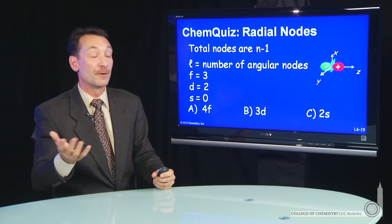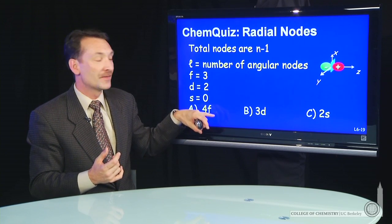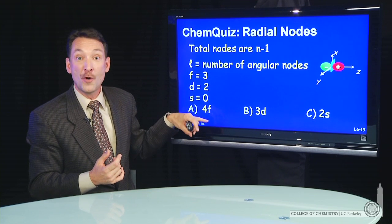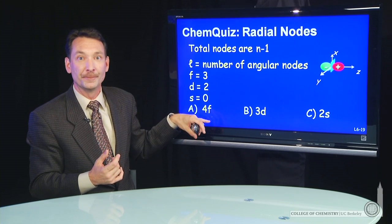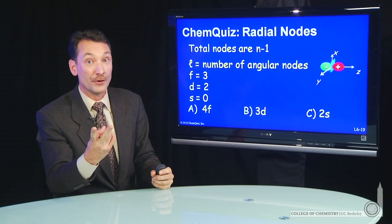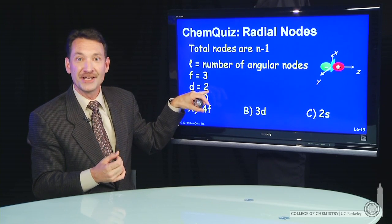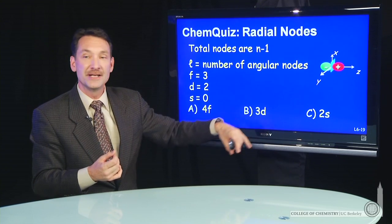So now we can easily tell what's going on. Remember, there's three nodes in the 4f, but they're all angular. So there are no radial nodes in a 4f orbital. The 3d has two total nodes, n minus 1, but they're both angular. Again, no radial nodes in the 3d.